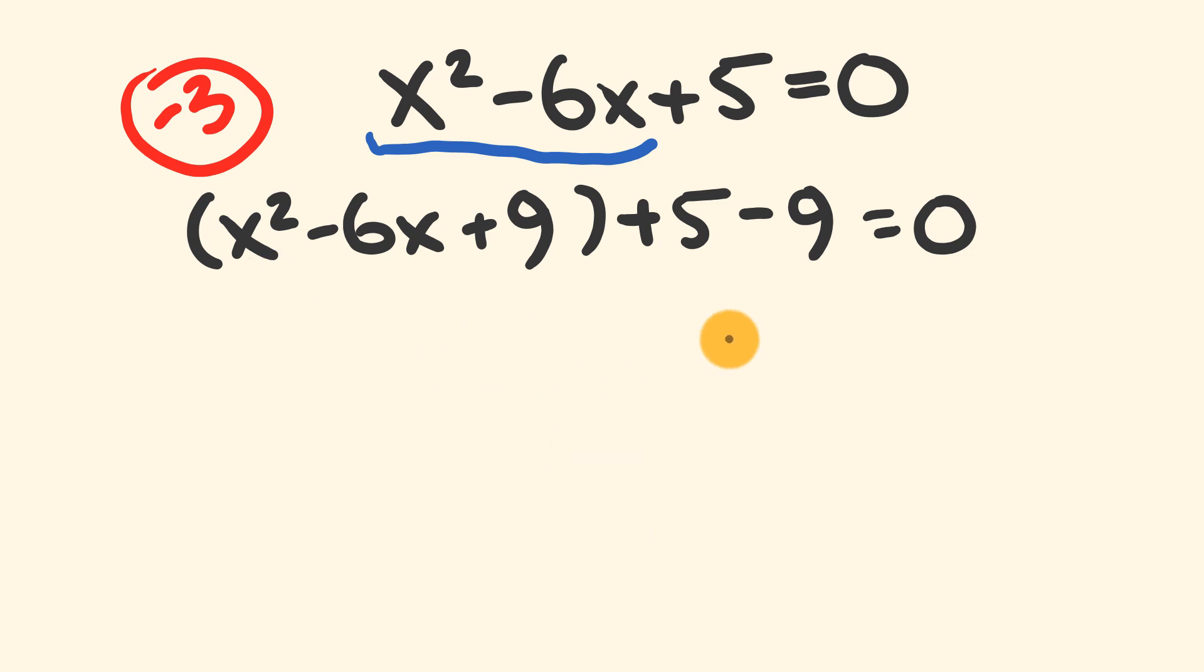Now we're going to simplify the equation we have. First, we have x² - 6x + 9. This is a perfect square and can be simplified. This equals (x - 3)². If you jotted down that -3 earlier, you can see it's the same value here. (x - 3)(x - 3) = x² - 6x + 9, and we've simplified that down.